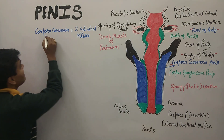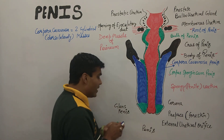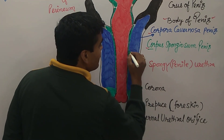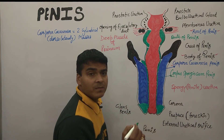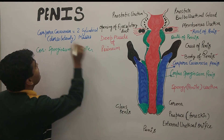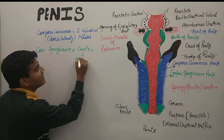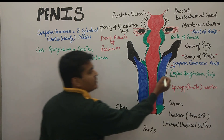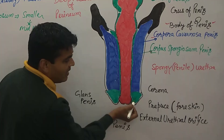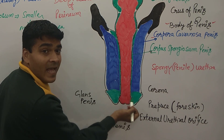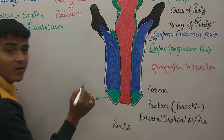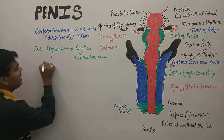The corpus spongiosum — shown here as the green color structure — is a smaller mass than the corpora cavernosa, and it is found in the mid-ventral area. At the distal end, the corpus spongiosum enlarges, and this enlarged portion is known as the glans penis.